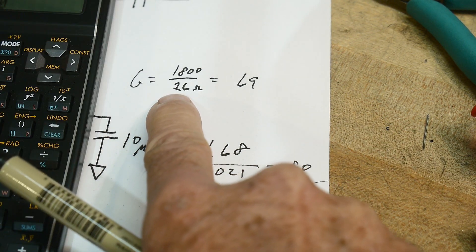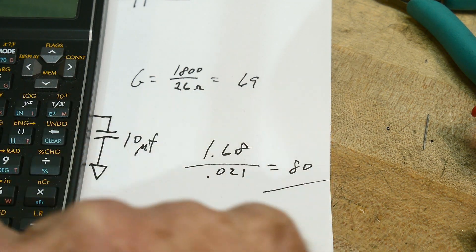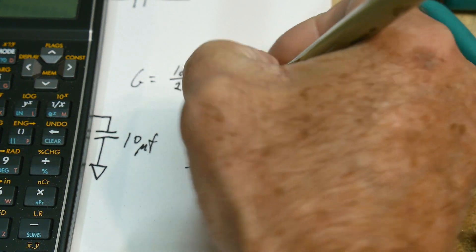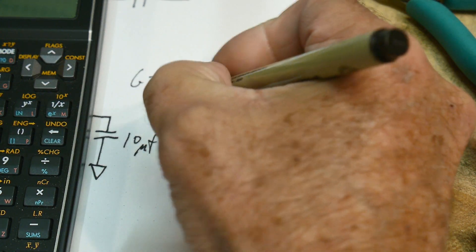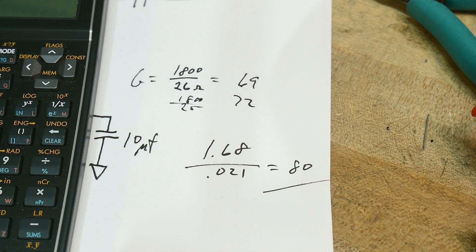If we had used 25 ohms here, 1800 divided by 25, we'd get 72. 72 if we used 25, right? So we're sort of in the ballpark.